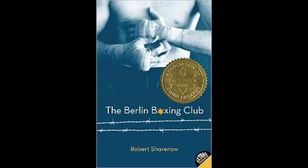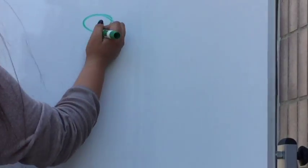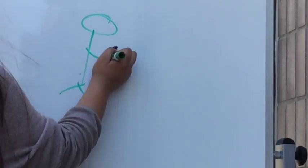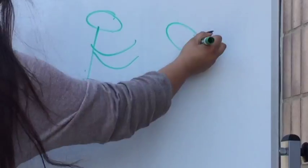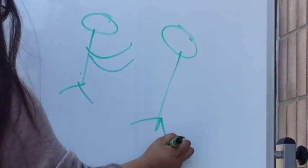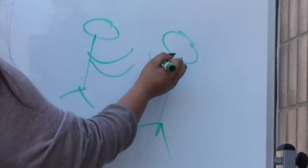This is the story of The Berlin Boxing Club by Robert Schoenow. The story's main protagonist is named Karl Stern. Karl has never considered himself to be a Jew, but he does have ties to a Jewish family.